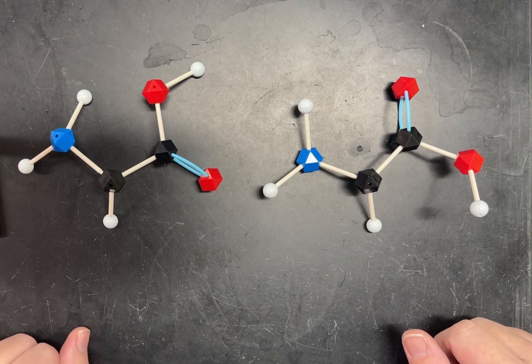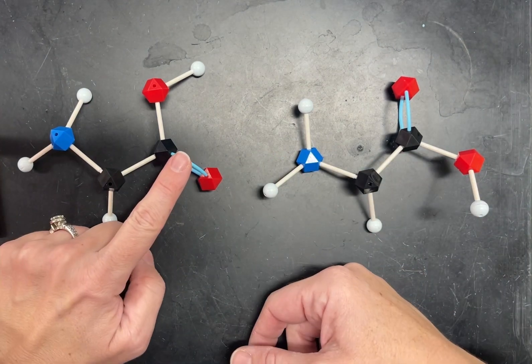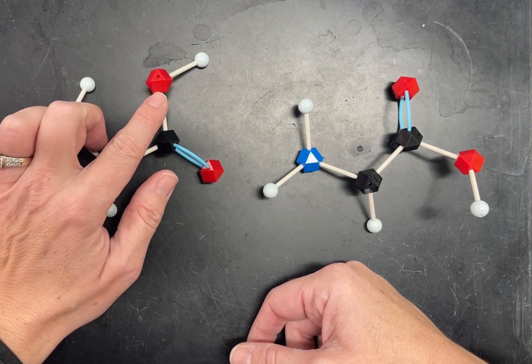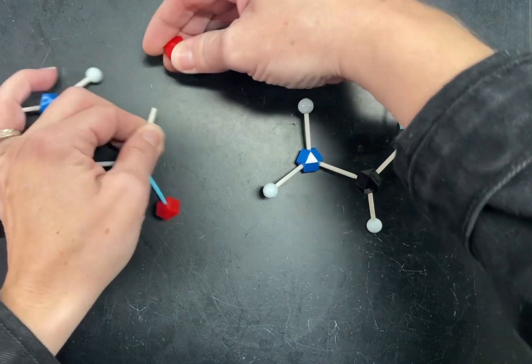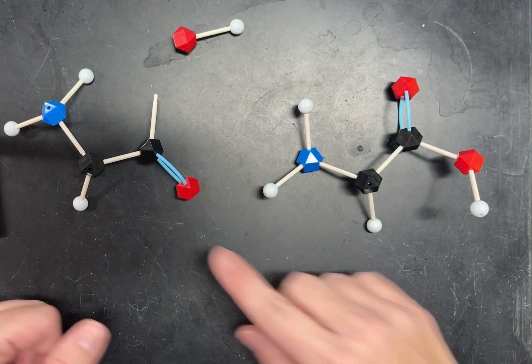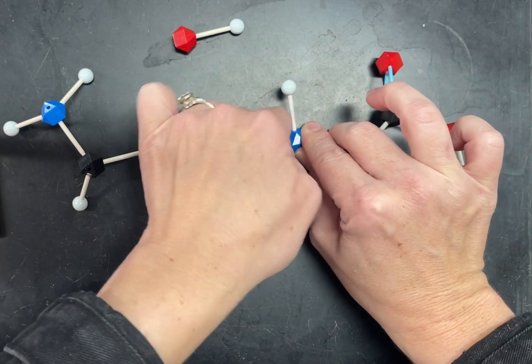So now all you do is you find the double bond oxygen. You don't take that one. You go over here. You remove the OH from the double bonded carbon oxygen and an H from the nitrogen and the other one.